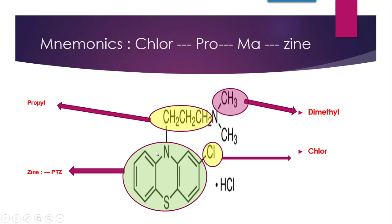To summarize the mnemonic: Zine — draw the phenothiazine ring first. Then on the nitrogen, draw M — that is N-dimethyl — but it is present at the third carbon of propyl, so draw propyl first, then N-CH₃CH₃. At the second position of the ring, chlorine will come. This way you remember the structure with no extra effort — only four split-ups, and the structure is done.